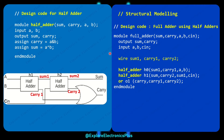You can see: module full_adder — sum, carry, A, B, C_in are the ports. Half_adder is the module name being used here. The full adder block internally contains two half adders and an OR gate. The code instantiates one half adder with instance name h0 and another with instance name h1.